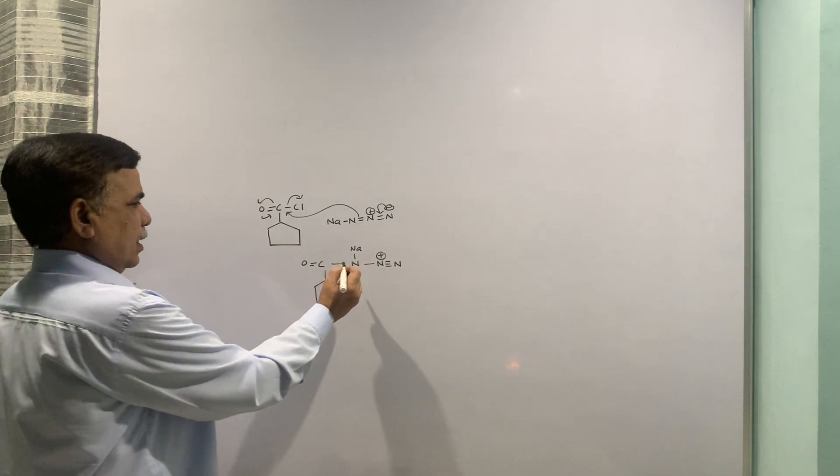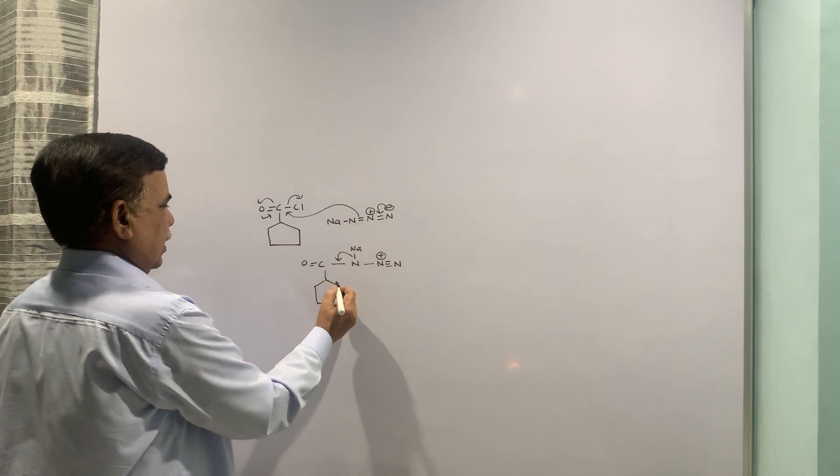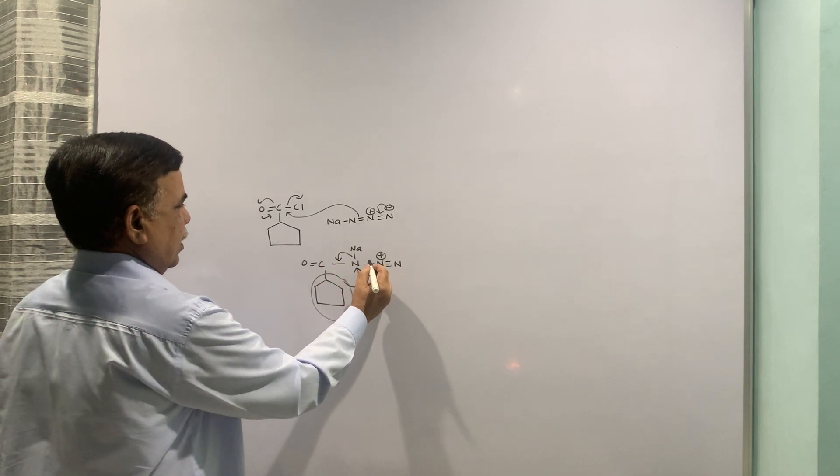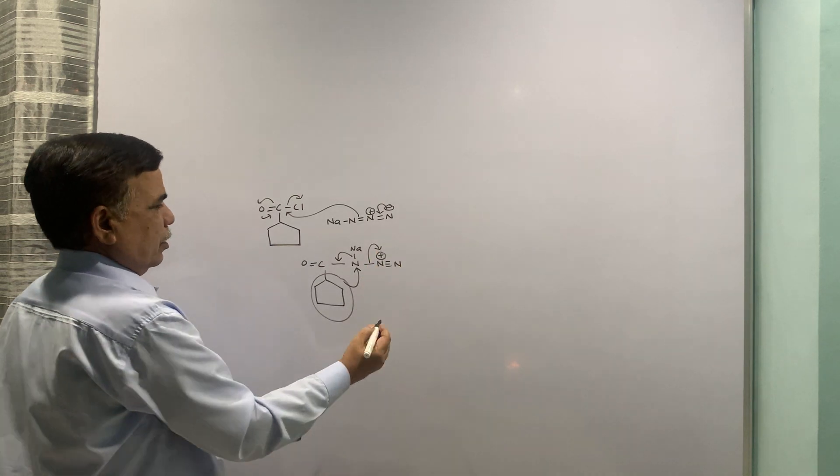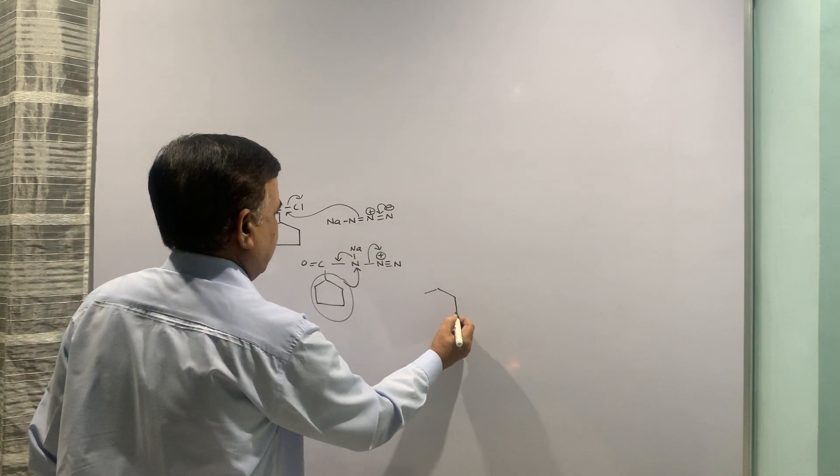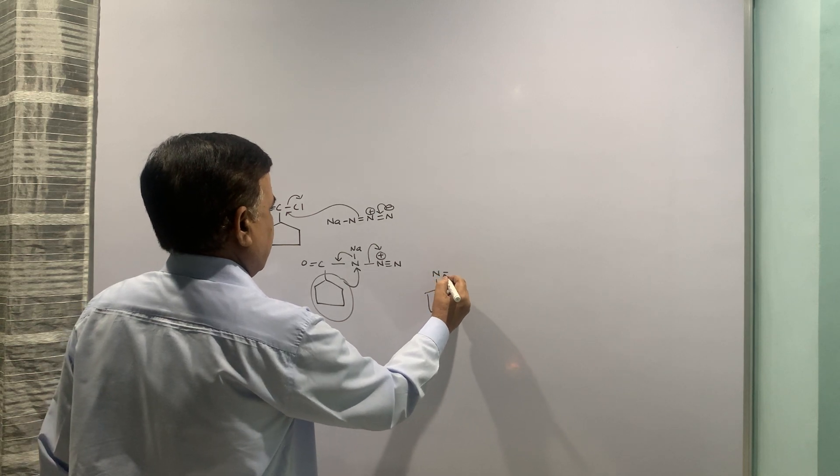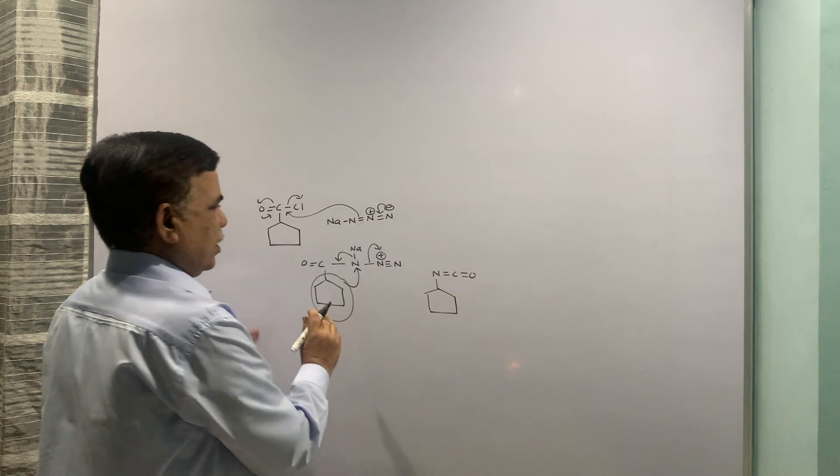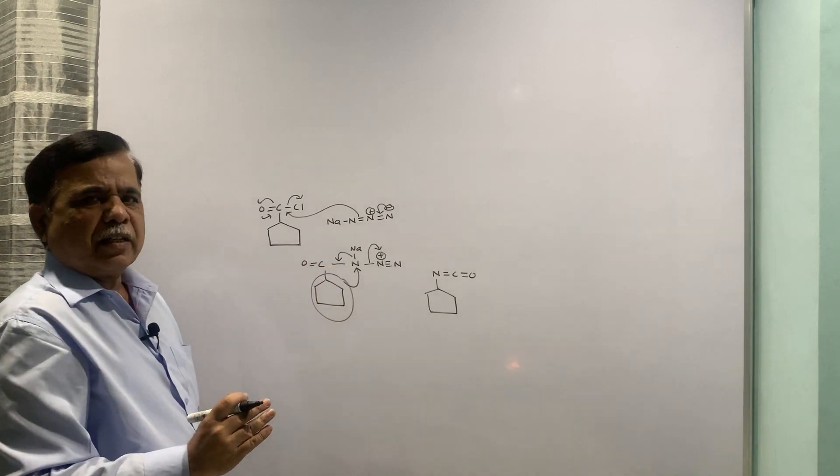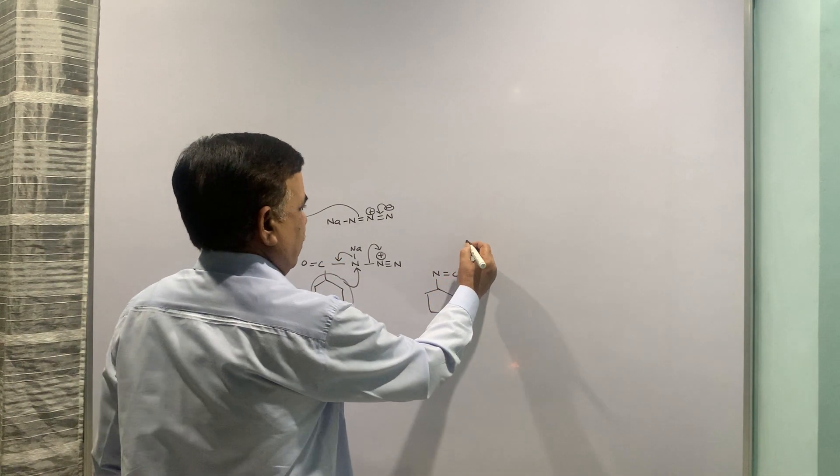Then this comes back, this entire ring comes here, this goes out. Eventually what you have, you just have to shift this ring here, rest of the things are same.